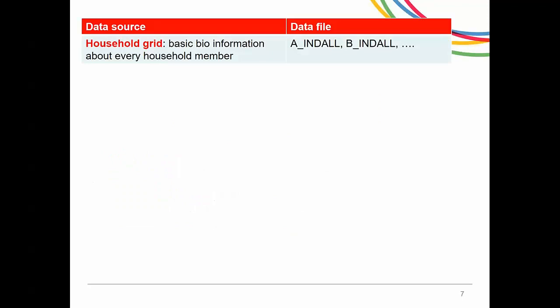Let's think about the interview process. The interviewer first collects basic biographical information about every household member. This is generally answered by the person who owns or rents the accommodation, but if that is not possible, any adult in the household is asked. This information is stored in the file called INDALL — spelled I-N-D-A-L-L — which is called A underscore INDALL in wave 1, B underscore INDALL in wave 2, and so on.